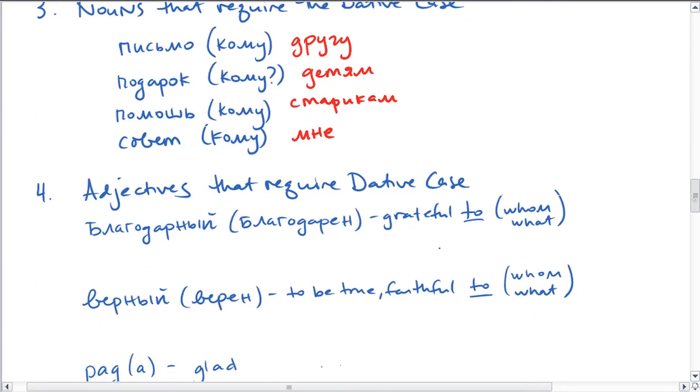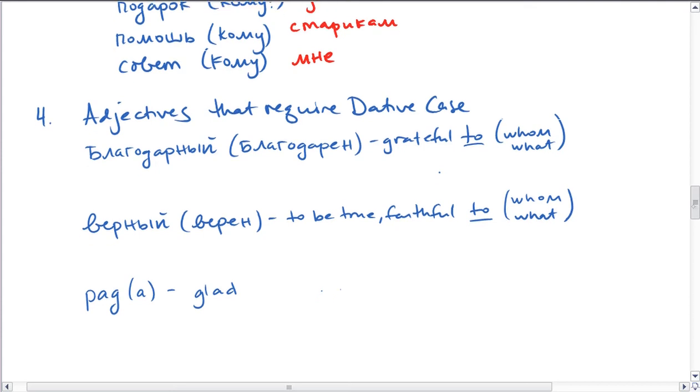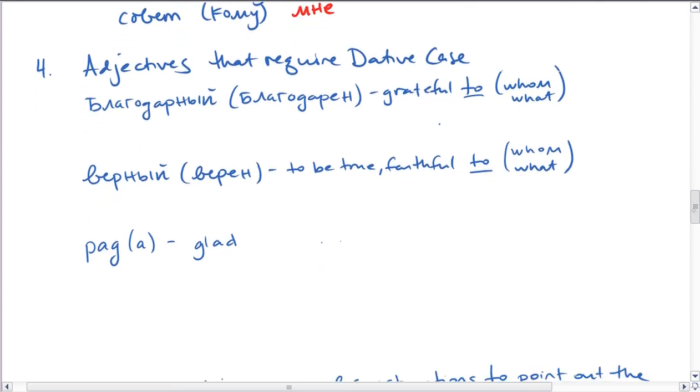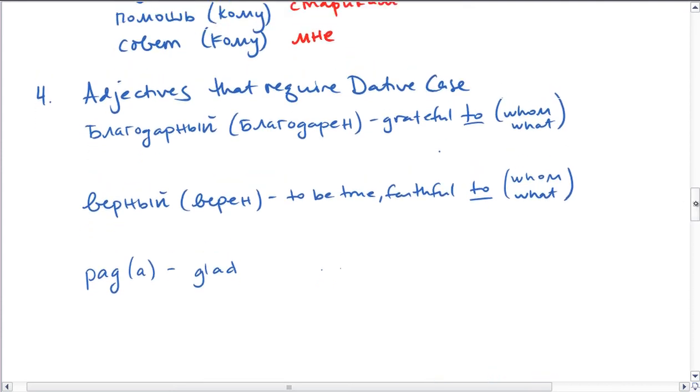There are also some adjectives that use or require the datum case. And these adjectives can be in their long or short form. So this is the long form, and this is the short. So благодарен or благодарна is to be grateful to. So it's an adjective: grateful to. To whom or to what are you grateful? And that person or thing that you're grateful to is in the datum case.